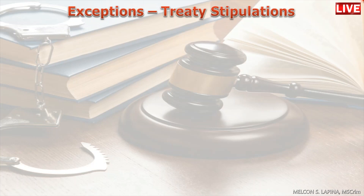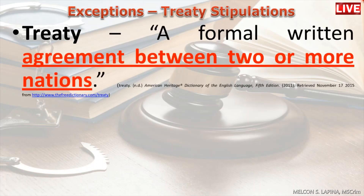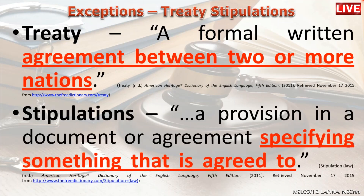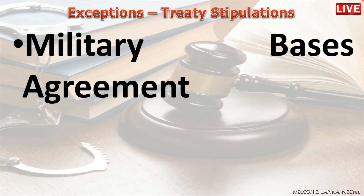Let us start with treaty stipulations. A treaty is a formal written agreement between two or more nations — in other words, an agreement between two or more countries, between or among nations. When we say stipulations, that is a provision in a document or agreement specifying something that is agreed to — these are the specifics of the agreement. So treaty stipulations are the specifics of the agreement between and among nations.